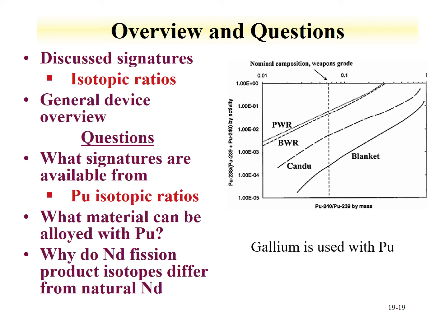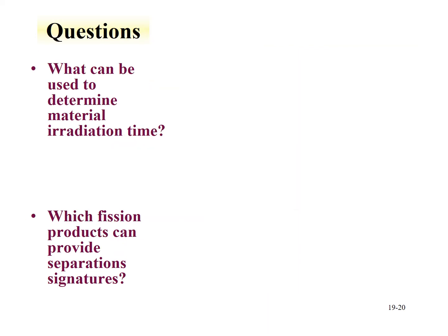What material can be alloyed with plutonium? Referring back to the plutonium lecture, there is a host of materials, but for forensics applications it would be gallium that is used for an alloy of plutonium. And why do neodymium fission product isotopics differ from natural? This is primarily driven from the fission process. Not only can isotopic information give you data related to what type of reactor produced the material, but you can also get an idea of how long that material sat in the reactor.